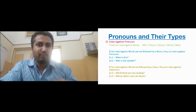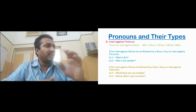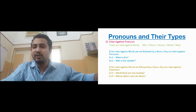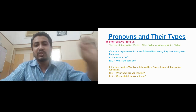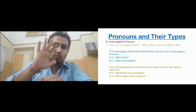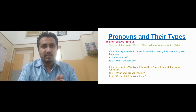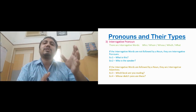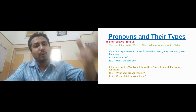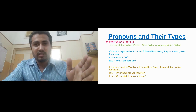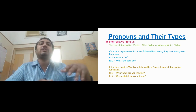The next type is interrogative pronouns. The five interrogative words used for pronouns and adjectives are: who, whom, whose, which, and what. The same rule applies as with demonstrative words. Right after an interrogative word, if there is no noun, it becomes an interrogative pronoun. If right after the interrogative word there is a noun, it becomes an interrogative adjective.